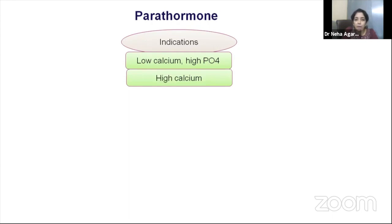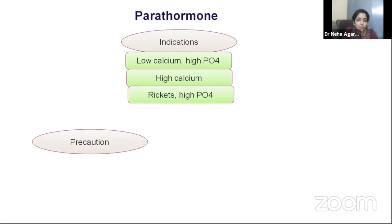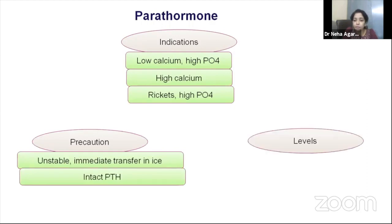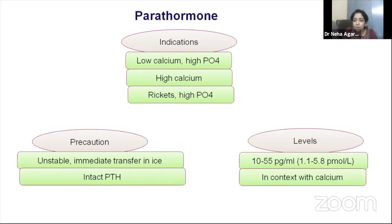A second indication for PTH measurement is any child presenting with high calcium, rickets, and high phosphorus. Normal PTH values range from 10–55 pg/mL and should always be analyzed in context with calcium. In presence of low calcium, PTH is expected to compensate — so even a 'normal' PTH is inappropriately normal, indicating hypoparathyroidism, while a high PTH with low calcium indicates secondary hyperparathyroidism.